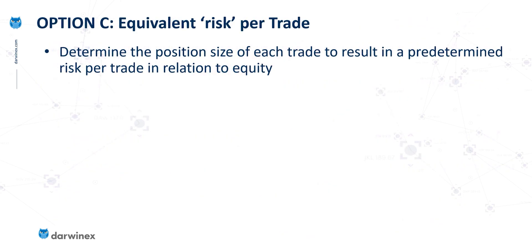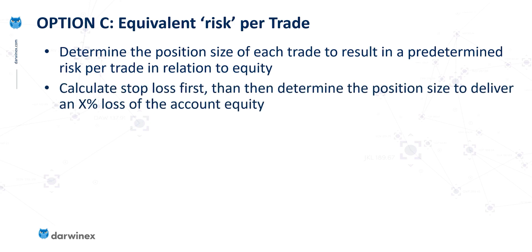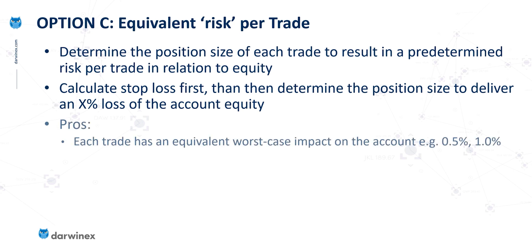The third option is where you aim to have an equivalent risk per trade. One technique is to first calculate where your stop loss needs to be based on the logic behind your trading strategy, then perform a calculation to determine what position size would deliver a specific percentage loss of the account's equity if that stop loss were to be hit. This technique has a major advantage over the other two: every single trade has an equivalent worst-case impact on the account. You might consider values of 0.5% of your account's equity per trade, or 1%, or you might prefer to remain more conservative and go lower.